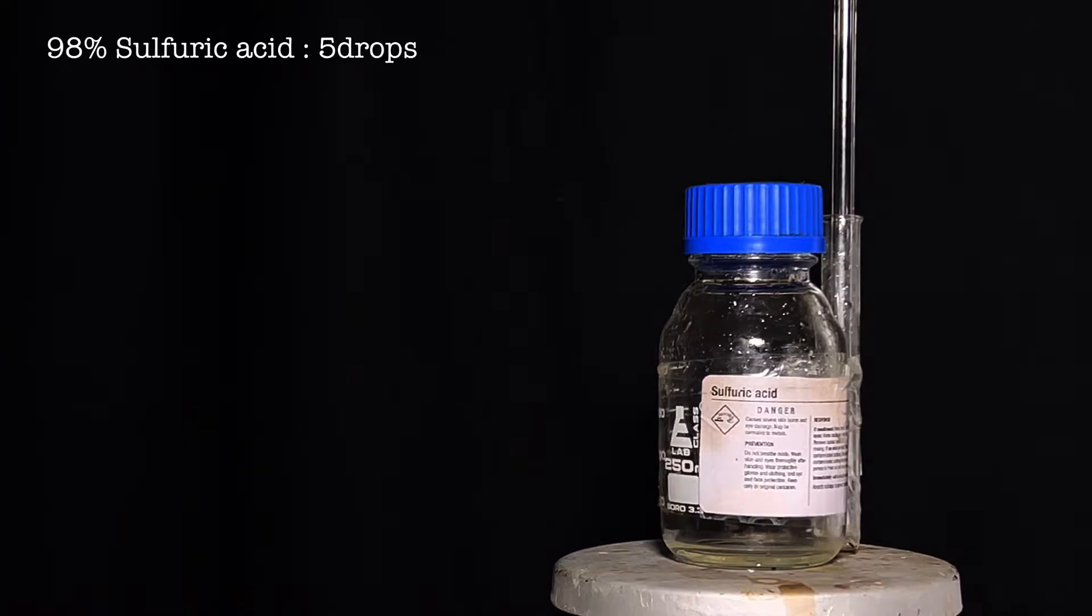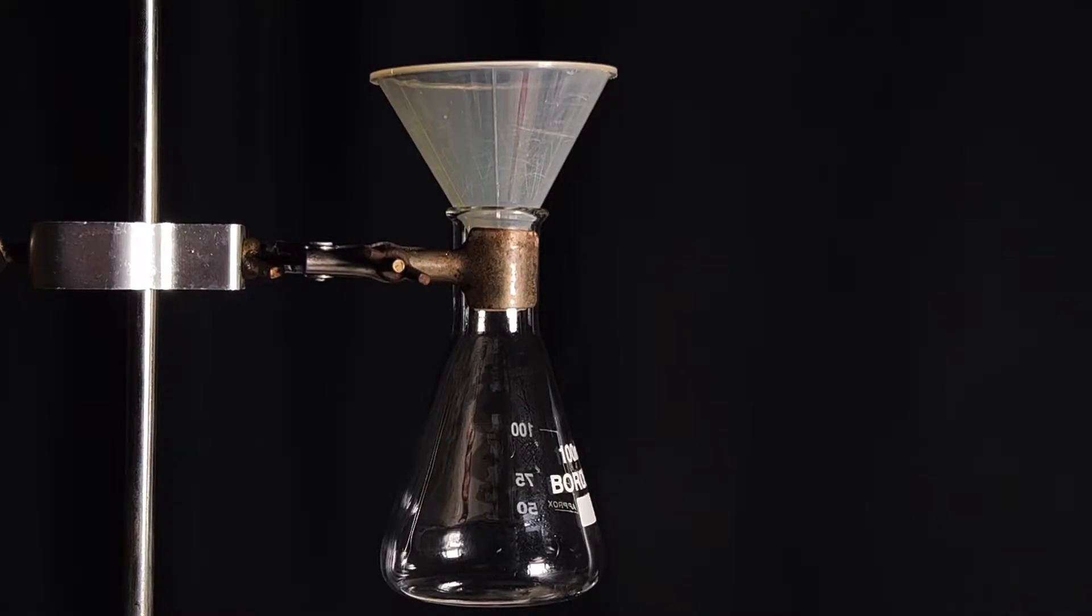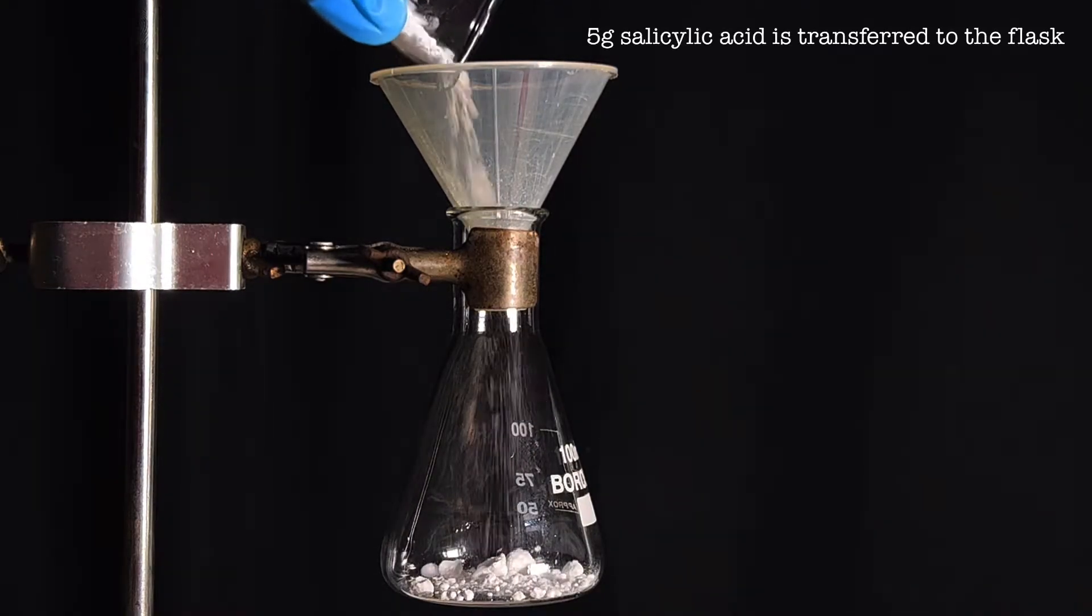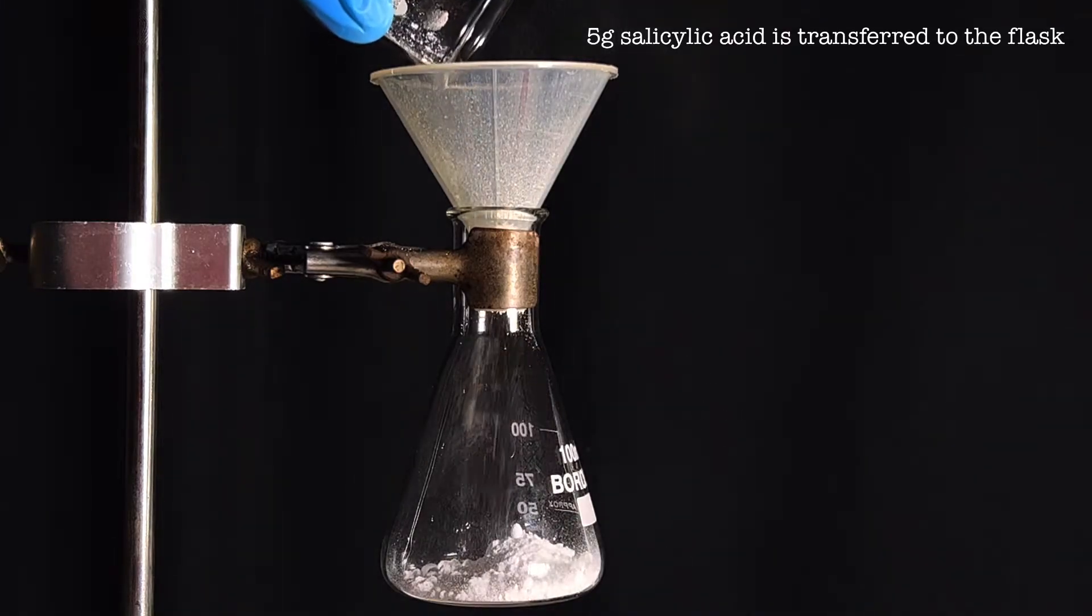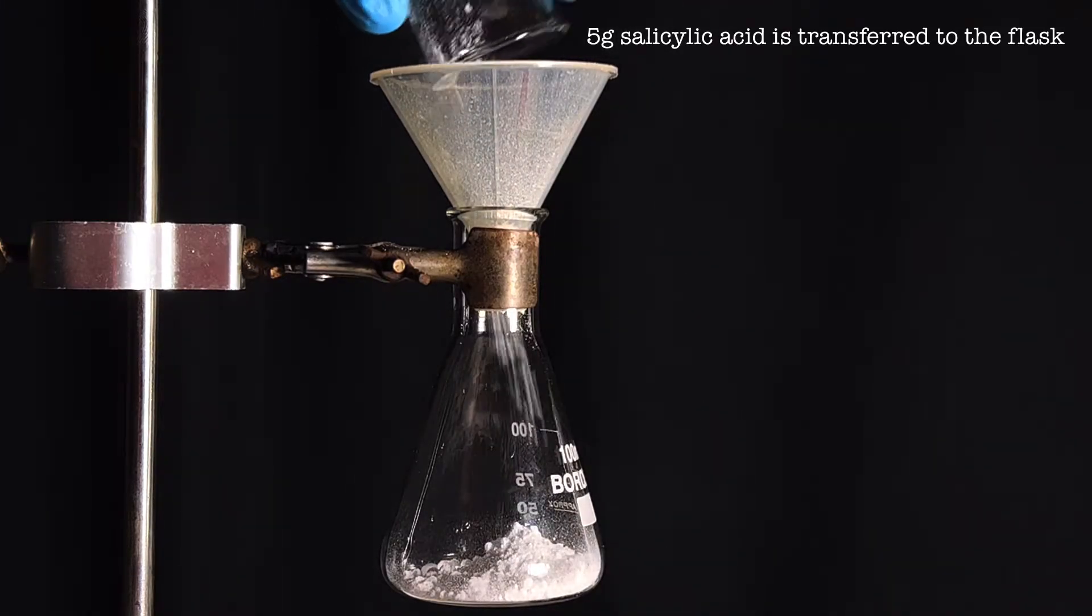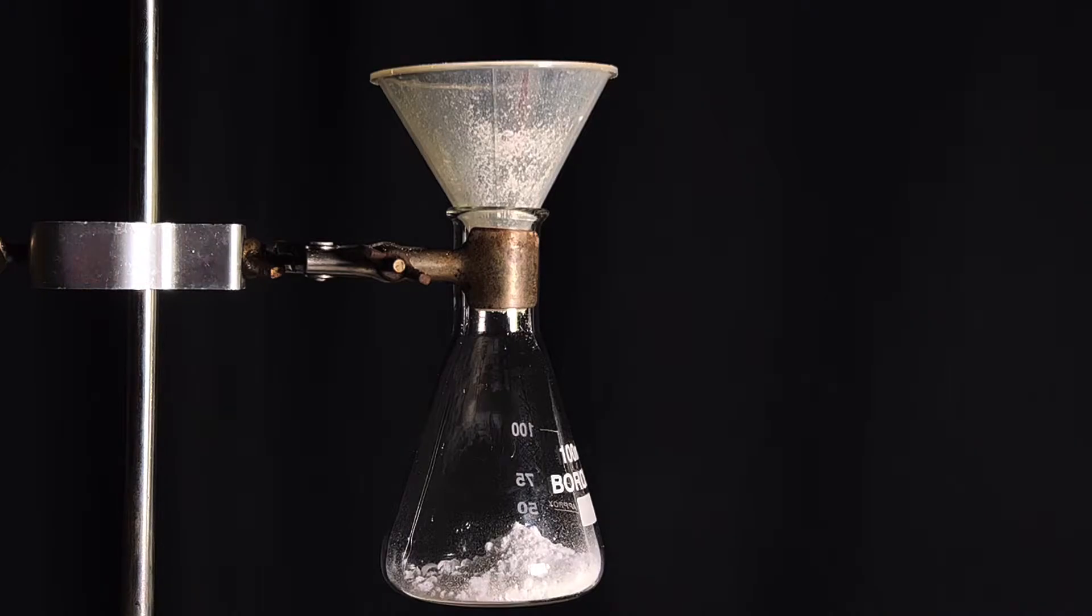Start by fixing a 100 milliliter Erlenmeyer flask on a stand via a clamp. 5 grams of salicylic acid was transferred to the flask using a powder funnel to prevent spillage.